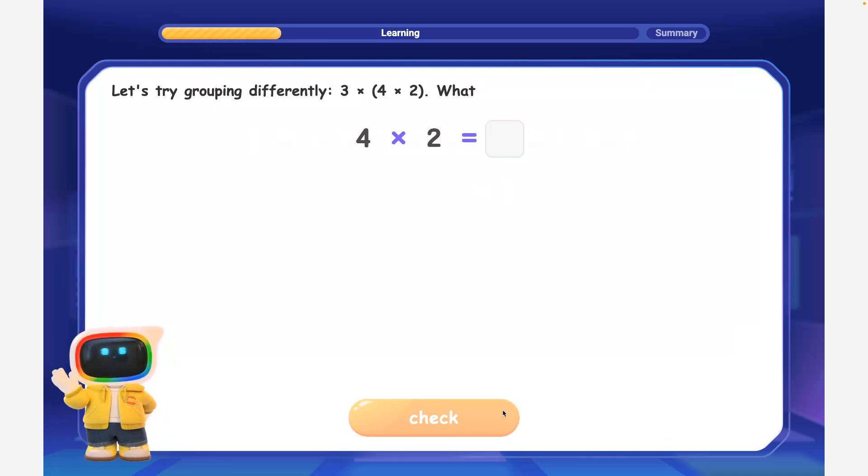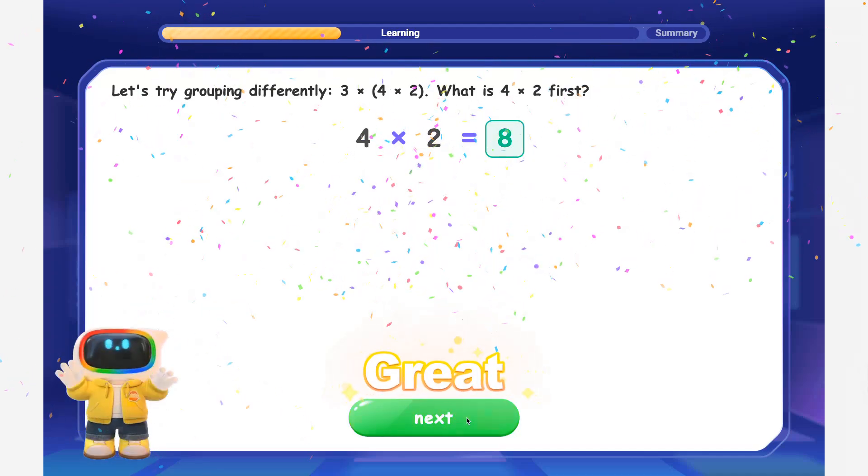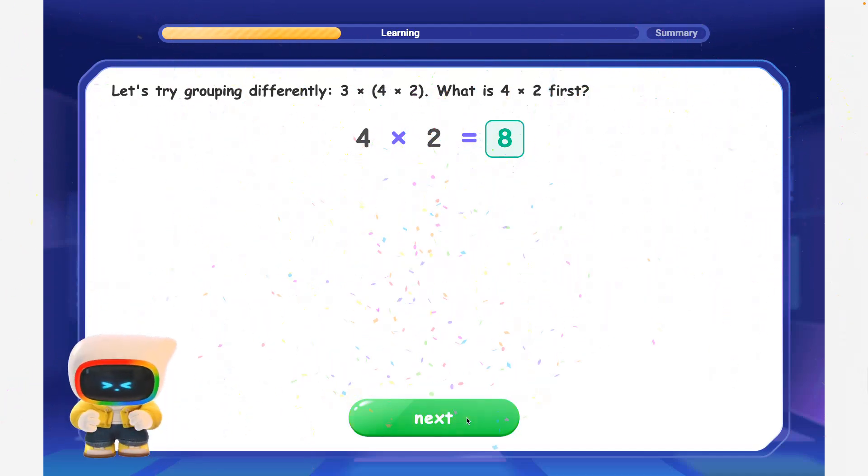Let's try grouping differently. 3 times, 4 times 2. What is 4 times 2 first? Excellent! 4 times 2 is equal to 8, so our equation becomes 3 times 8.